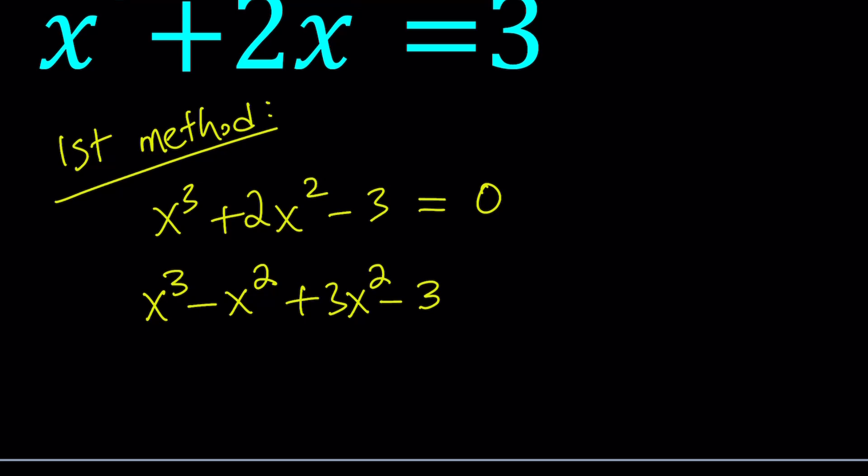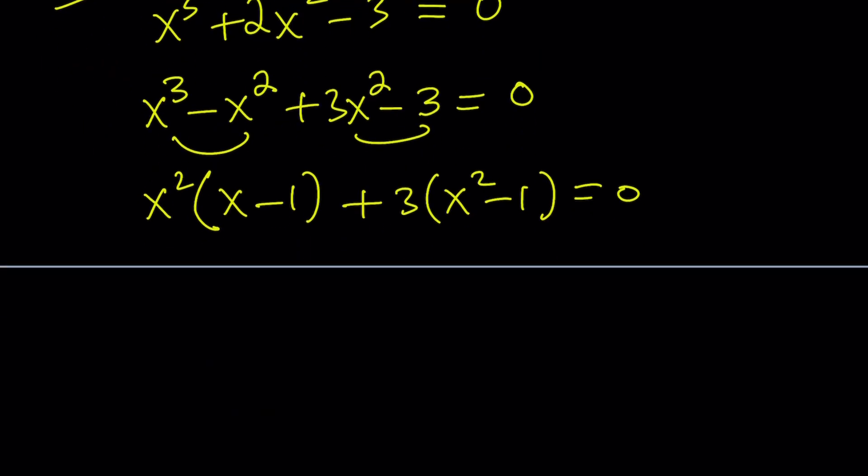Again, I'm not necessarily using the fact that x equals 1 is a solution. So now if we factor this by grouping like this one and this one, we get x squared times x minus 1 plus 3 times x squared minus 1 equals 0. And from here it should be clear that x equals 1 is a solution. But let's proceed with the solution.